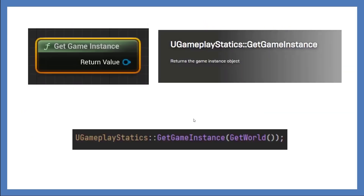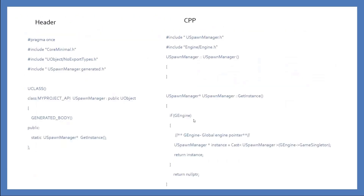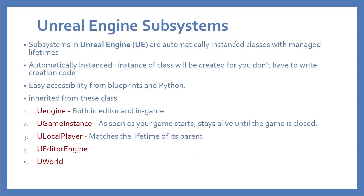Instead, I either use the Game Instance or the Unreal Engine Game Subsystem. It's a very smart design — it's automatically instanced classes with managed lifetimes. You inherit from one of these subsystem classes as needed. For example, if you're extending engine functionality and creating custom tools, you'd use UEngineSubsystem. As a gameplay programmer, you'll more likely use UGameInstanceSubsystem or ULocalPlayerSubsystem.